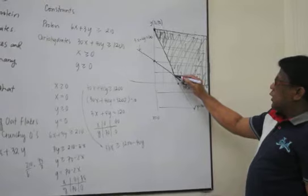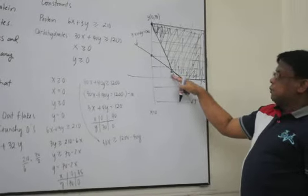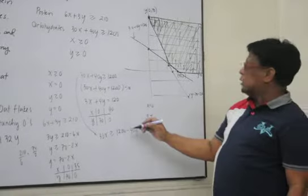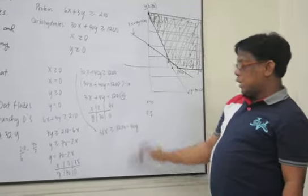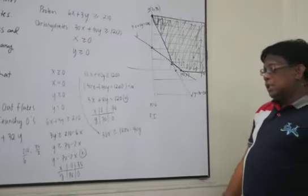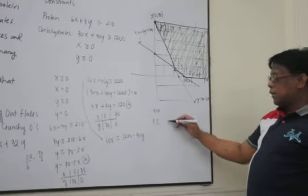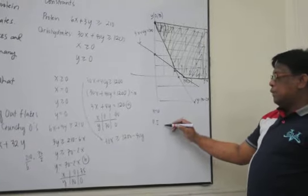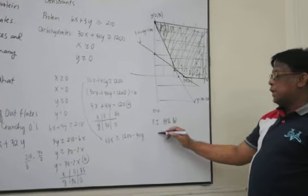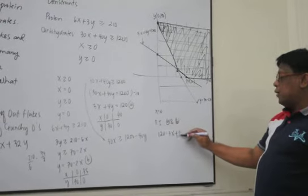What about this point here now? This point here, let us define it as the point of intersection between, if we call this as equation A, and then, equation B. So, let us eliminate one of the variables. Okay, so let us rewrite the equation. Equation A is 120 equals 3x plus 4y.